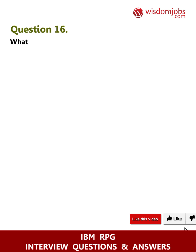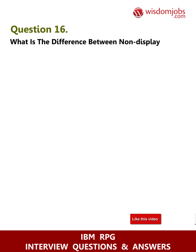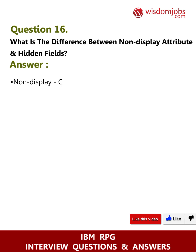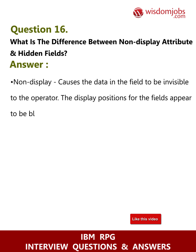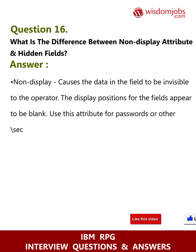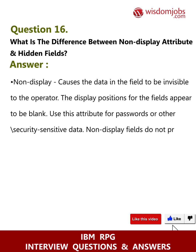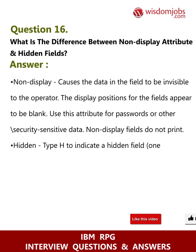Question 16: What is the difference between non-display attribute and hidden fields? Answer: Non-display causes the data in the field to be invisible to the operator. The display positions for the fields appear to be blank. Use this attribute for passwords or other security sensitive data. Non-display fields do not print. Hidden: type H to indicate a hidden field.